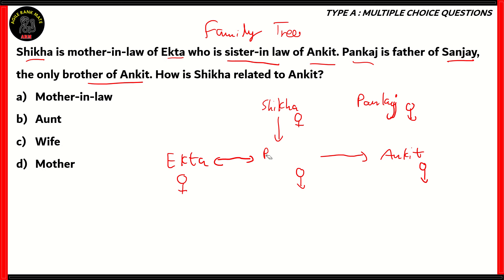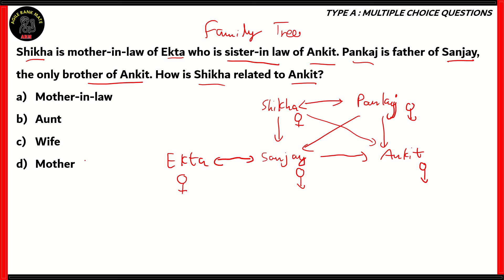Let's retrace our steps. Pankaj is Sanjay's father, and Sanjay is the only brother of Ankit. Since Ekta married Ankit's brother to be his sister-in-law, Sanjay is Pankaj's son and Ankit's only brother. So since Pankaj is also Ankit's dad, Shikha is their mother. Therefore, the relation between Shikha and Ankit is that of mother — Shikha is the mother of Ankit. The only relation that holds is option D, mother.